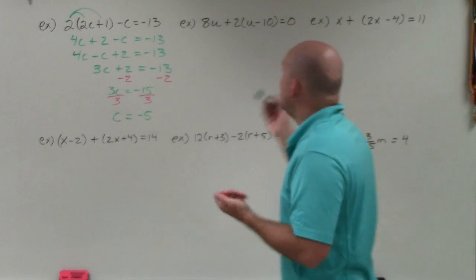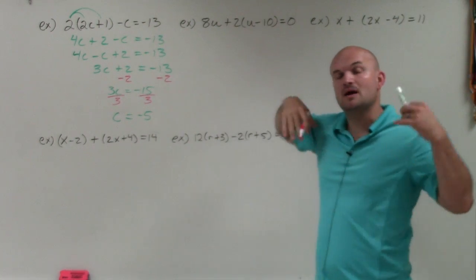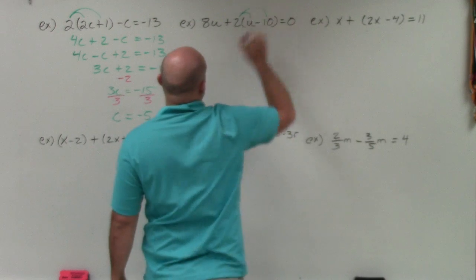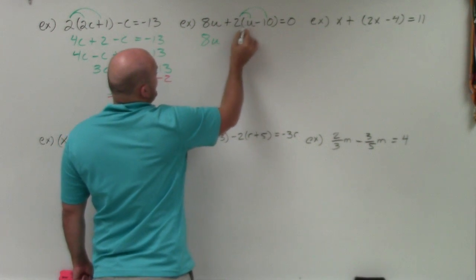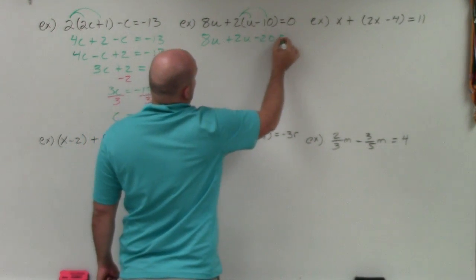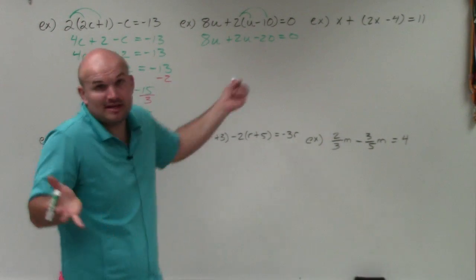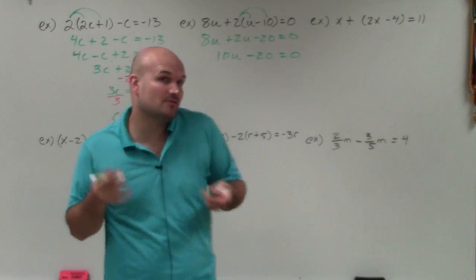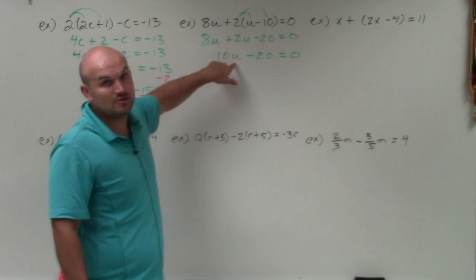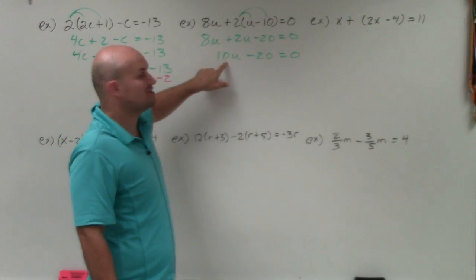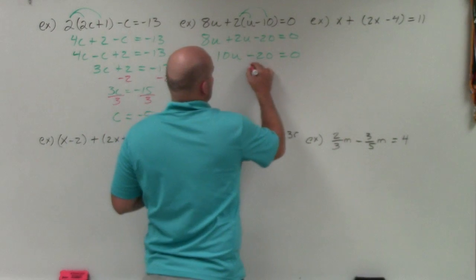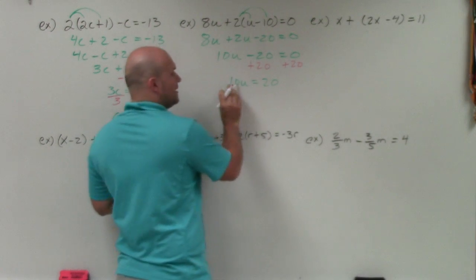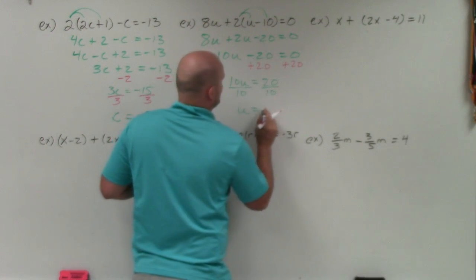On the next example, we have another set of parentheses, so I'll apply the distributive property again to get rid of them. I distribute the 2: 8u plus 2 times u is positive 2u, and 2 times negative 10 is negative 20, equals 0. The u's are already next to each other, so I combine them to get 10u minus 20 equals 0. To undo subtraction I add 20 to both sides, giving 10u equals 20, then divide by 10 to get u equals 2.